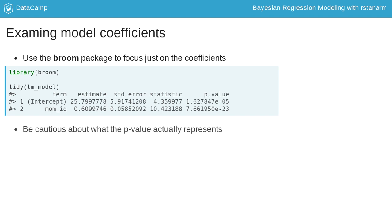However, recall what the p-value really tells us. This only tells us the probability of observing data that gives rise to a test statistic this large if the true value of the parameter were zero. This is the key problem with frequentist regression.